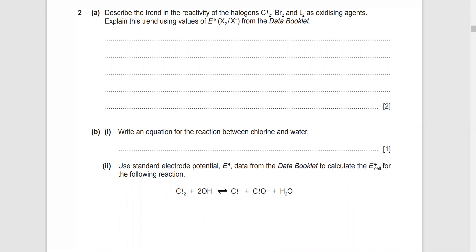Hello everyone. We're going to try and solve the following question in this lecture. This is 9701, May/June 2018, question paper 4.2. I'm going to solve question number two. The question states: describe the trend in the reactivity of the halogens Cl2, Br2, and I2 as oxidizing agents. Explain this trend using E0 values from the data booklet.